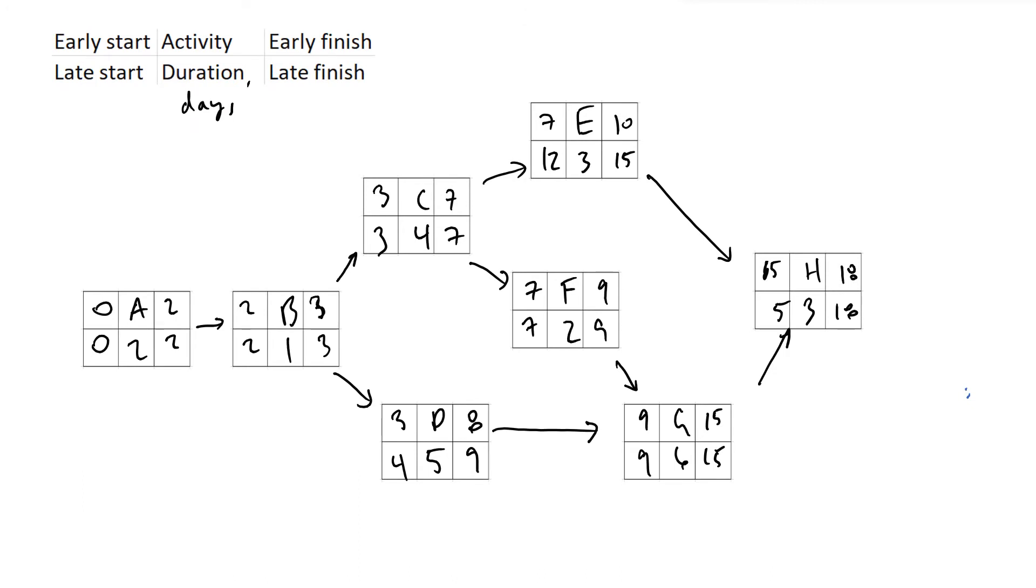And then finally what we ended up with is our network schedule diagram. From this, we were able to determine our critical path by looking at which activities on this diagram had late finish and early finish dates that were equivalent, and early start and late start dates that were equivalent.